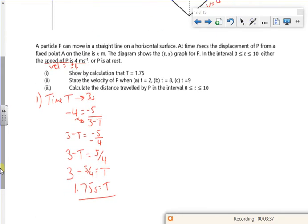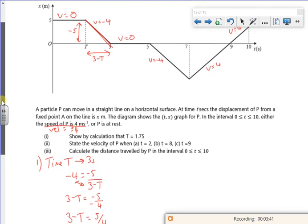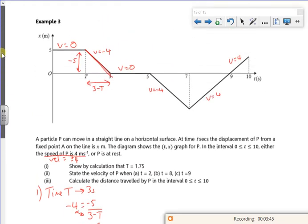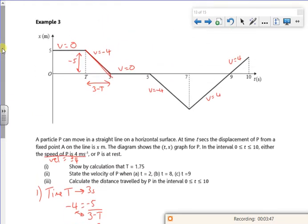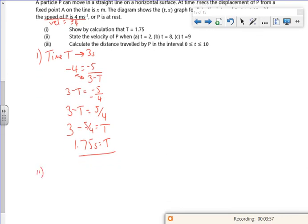Part two then. So state the velocity at t is 2, t is 8 and t is 9. So I've said that t there is 1.75. So if I know that this is 1.75, for t is 2, it must be minus 4 because it's going to be in there somewhere. So part two. So when t is 2, my velocity is minus 4 meters per second.